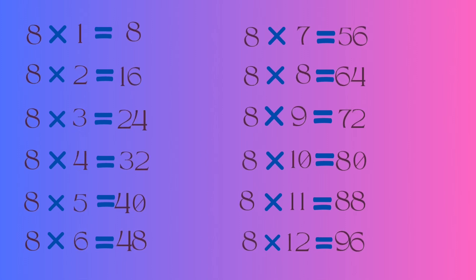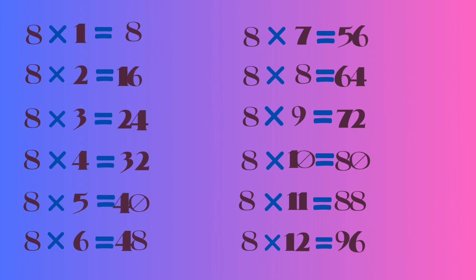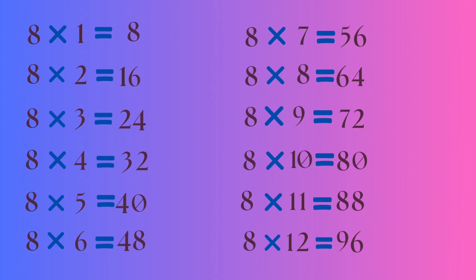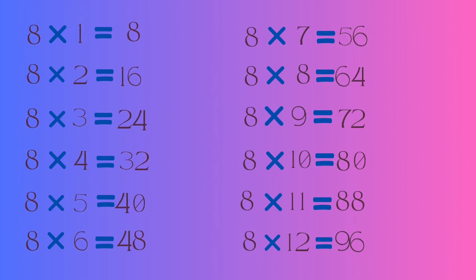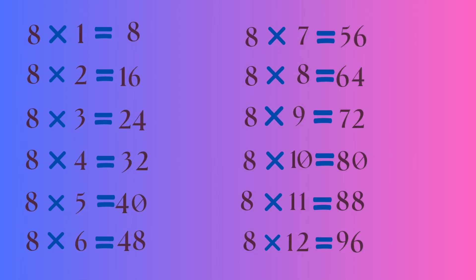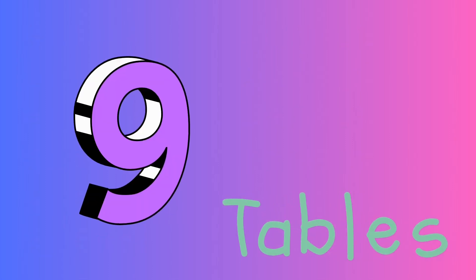8 tens are 80, 8 elevens are 88, 8 twelves are 96. Now let's move on to the 9 tables!